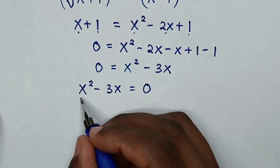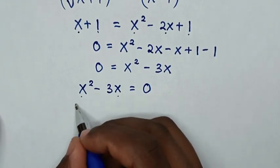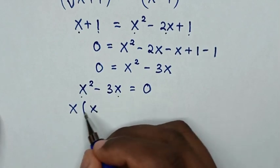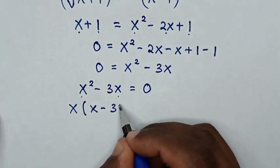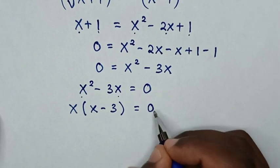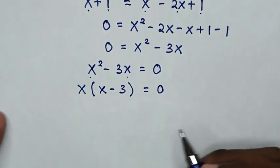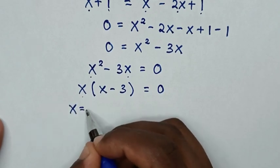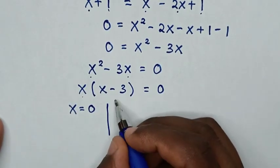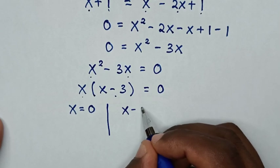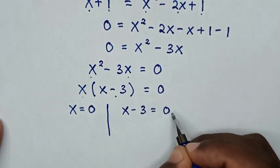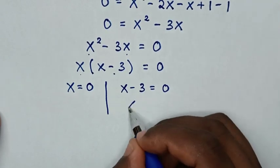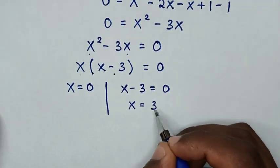In this equation x is common, so we factor out x: x times (x minus 3) equals 0. From this equation we have two solutions. The first solution is x equals 0, and from the second factor, taking negative 3 to the right side gives x equals 3.